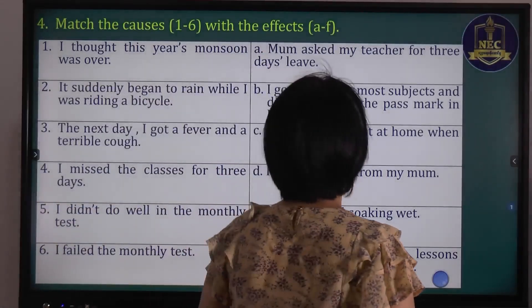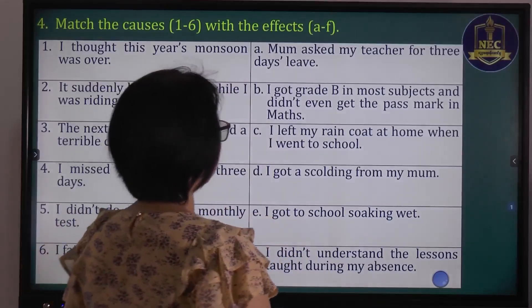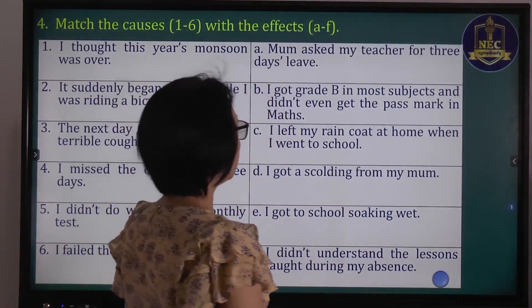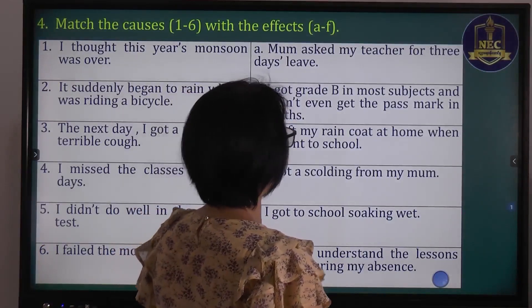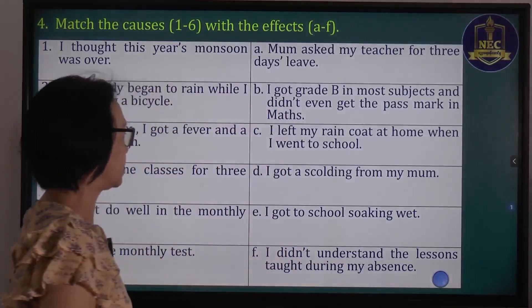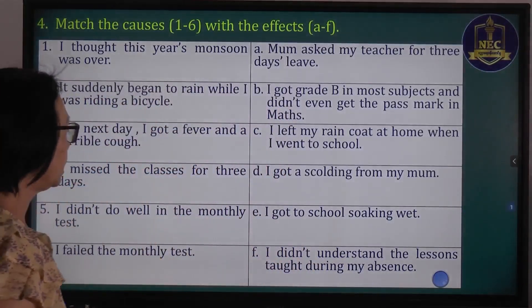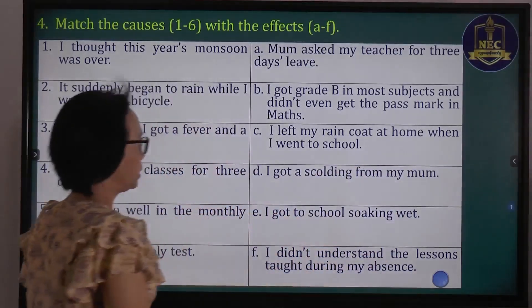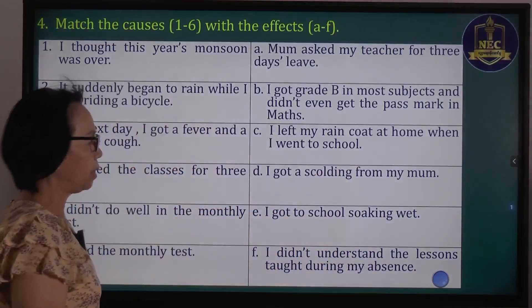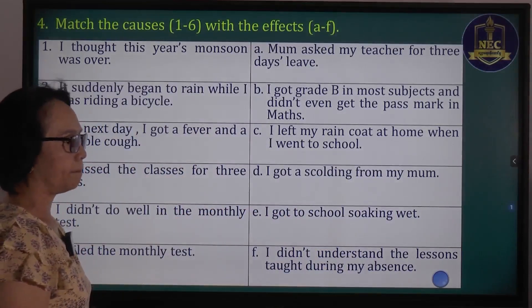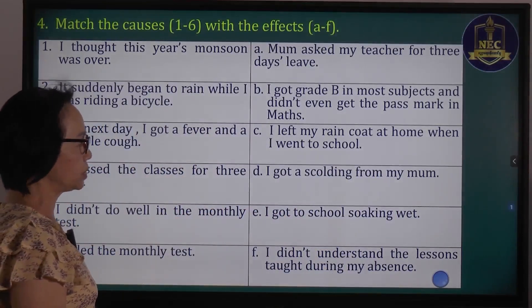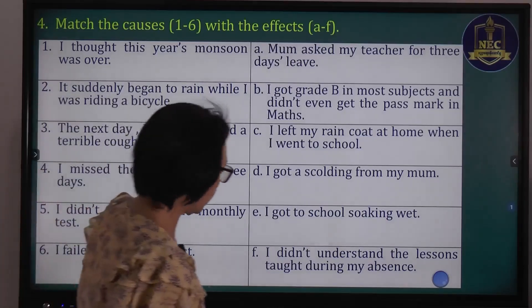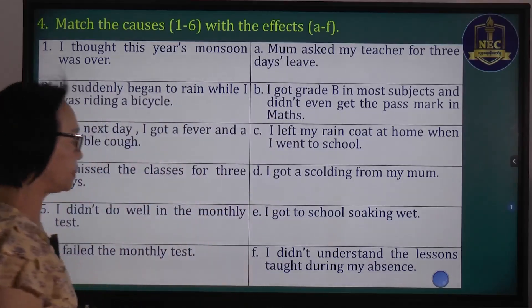A: mom asked my teacher for 3 days leave. B: I got grade B in most subjects and didn't even get the pass mark in maths. C: I left my raincoat at home when I went to school. D: I got a scolding from my mom. E: I got to school soaking wet. F: I didn't understand the lessons taught during my absence.